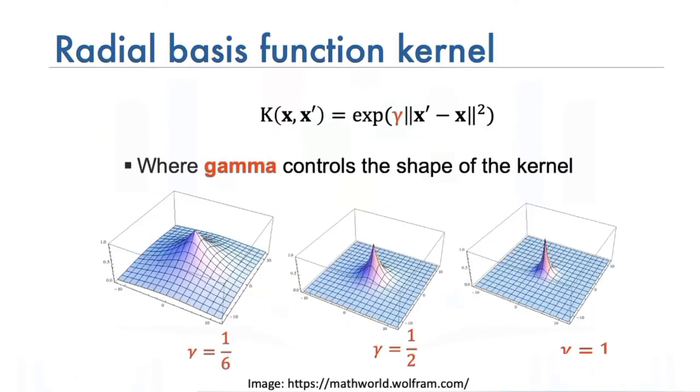The RBF kernel finds the difference between two inputs, X and X prime. That is called a support vector. The RBF kernel has the parameter gamma. Let's see how we select gamma.